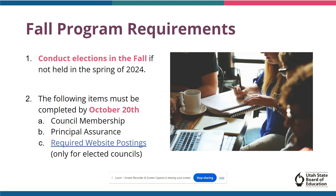If elections were not held in the spring of last year, your school should be conducting council elections for open spots in the fall. Once councils are set up, three major items must be submitted by October 20th. These items include the council membership form, principal's assurance, and all required website postings. If you save a copy of this presentation, you can access the website requirements by clicking on the required website postings link here.